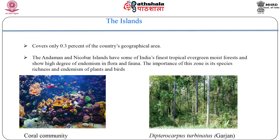The 10th zone is the islands. Although this zone covers only 0.3% of the country's geographical area, it is nonetheless important from the biodiversity perspective. The Andaman and Nicobar Islands have some of India's finest tropical evergreen moist forests and show a high degree of endemism in flora and fauna. The importance of this zone is its species richness and endemism of plants and birds. Because of the isolation of islands and their relatively small size, mammal fauna is poor and most species are rodents. To summarize, India is a highly diverse country in terms of its topography, flora and fauna, and these studies give us an idea of how to protect and conserve the endangered and endemic wildlife and plant life.